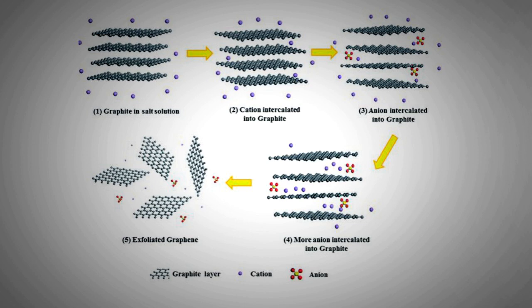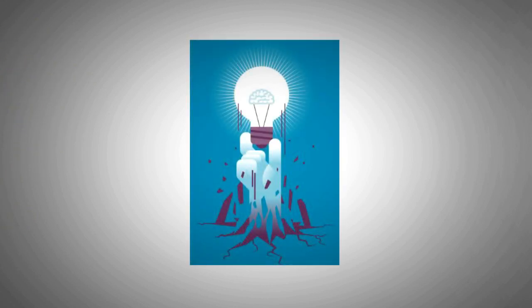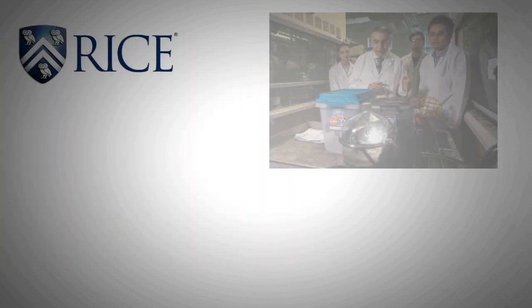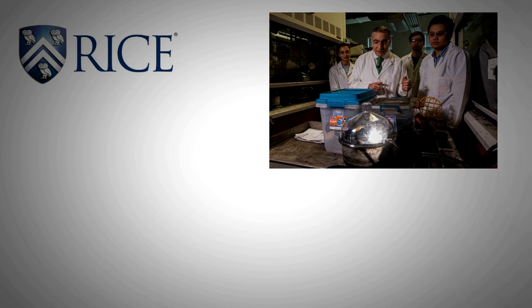It has to be mentioned though that all these methods are extremely low yield. Things however are about to change. More recently, scientists at Rice University have come up with a simplified, low cost, high yield method called flash graphene.